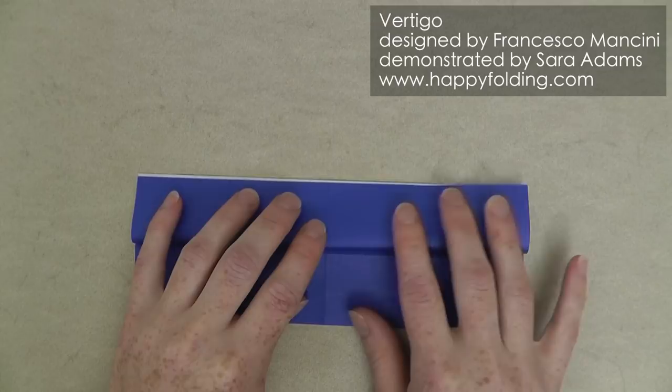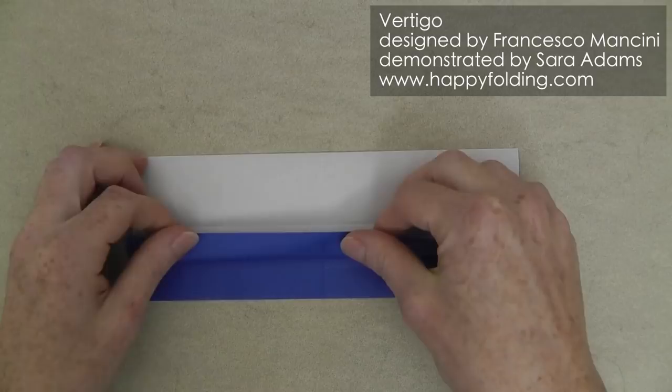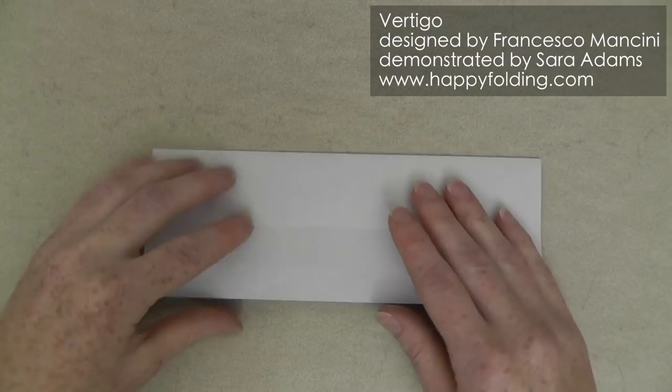Unfold, flip over, and repeat. Then bring the raw edge to the crease line you just created. Flip over, and repeat.